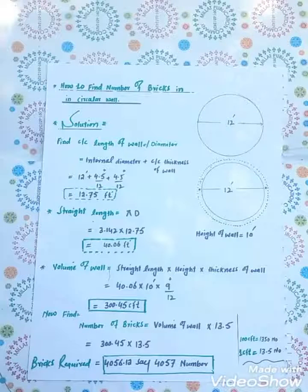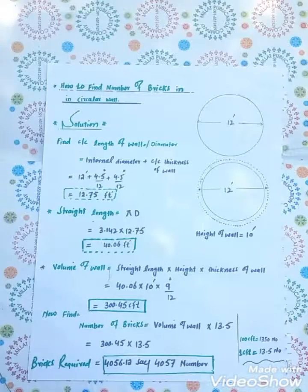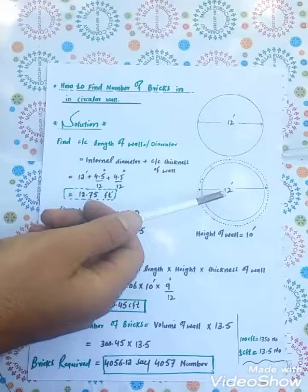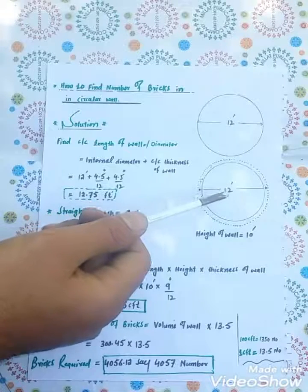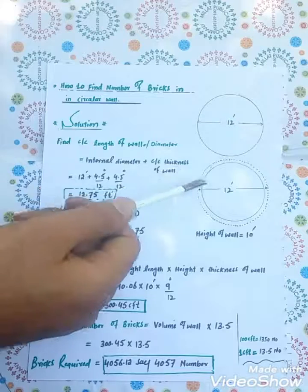Now let's start. For example, this is a circular wall. Internal diameter is 12 feet, thickness of wall is 9 inches, and height of wall is 10 feet.